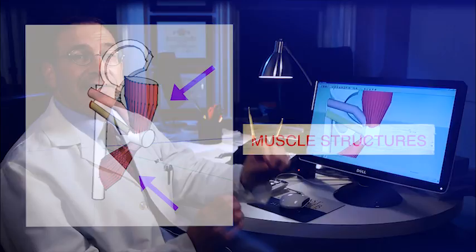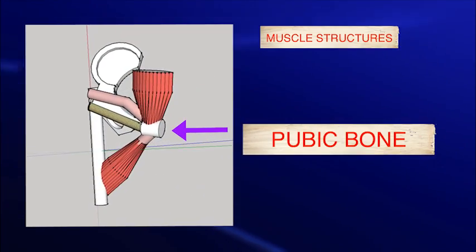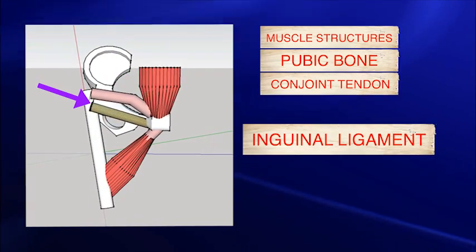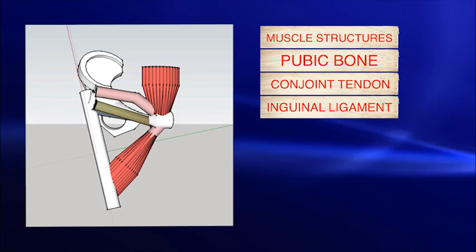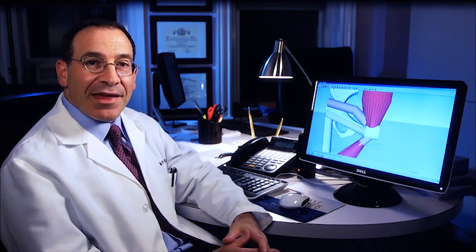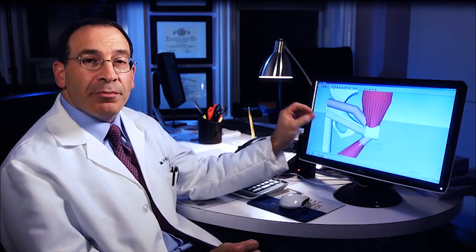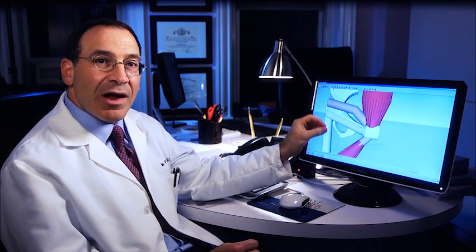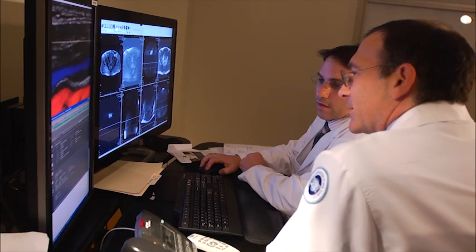What this means is that these structures, which are very important, powerful structures, are attaching to the bone all in nearly the same place. When the athlete plays, there is a tremendous amount of torque and stress on these structures and on the bone.